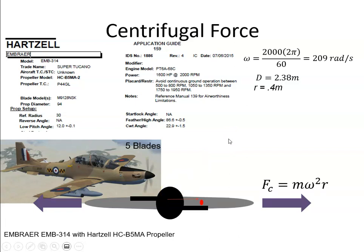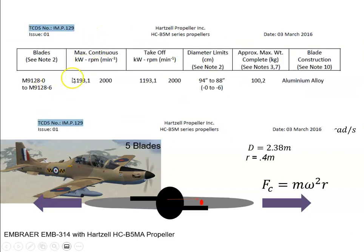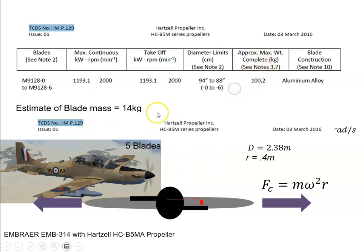Next, we look at the propeller type certificate data sheet. It confirms an RPM of 2000, and the complete propeller has a mass of 100 kilograms. With 5 blades and a hub — assuming the hub is twice the mass of a blade — that gives a ratio of 7 to 1, so dividing 100 by 7 gives a blade mass of approximately 14 kilograms, which I think is a reasonable ballpark figure.